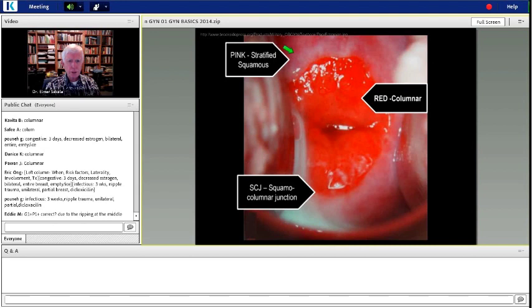Here, you can see it better. Stratified squamous is pink. The red, because the capillaries are just one cell from the surface, is columnar. And this is a squamous columnar junction - the SCJ.